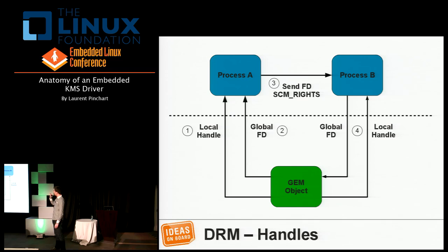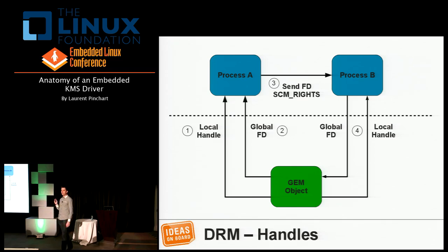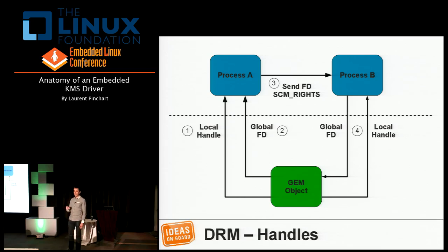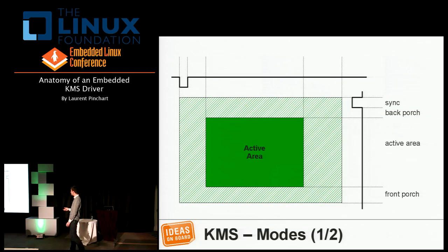The second process can then give the file descriptor back to the kernel driver and get a local handle it can use in all the APIs.